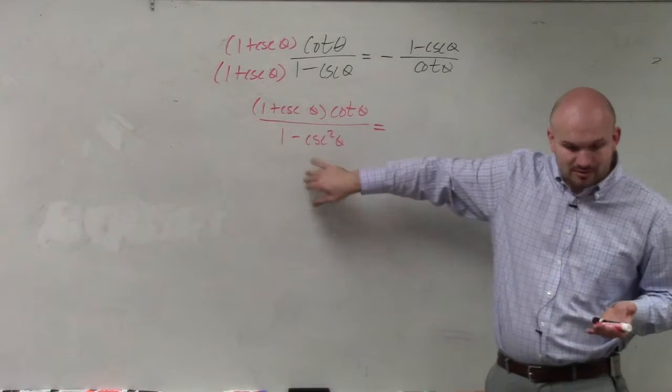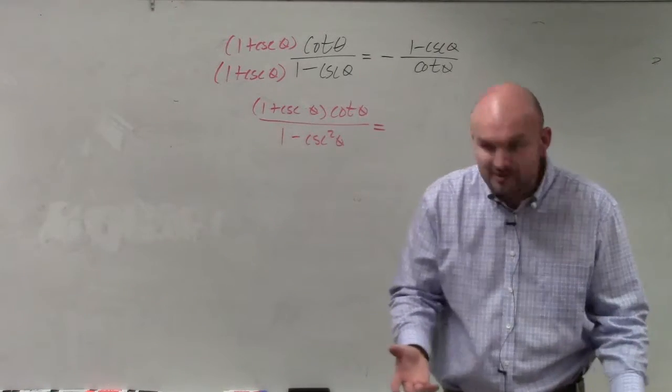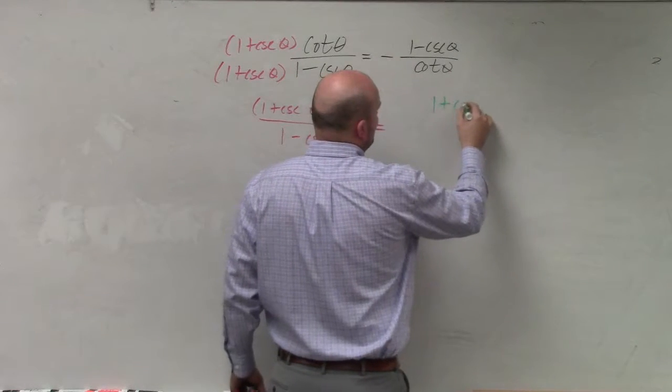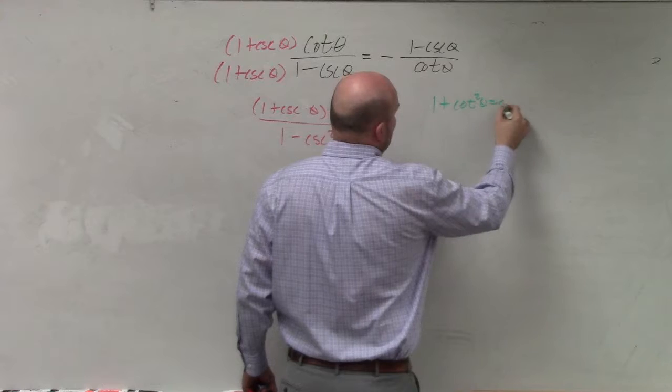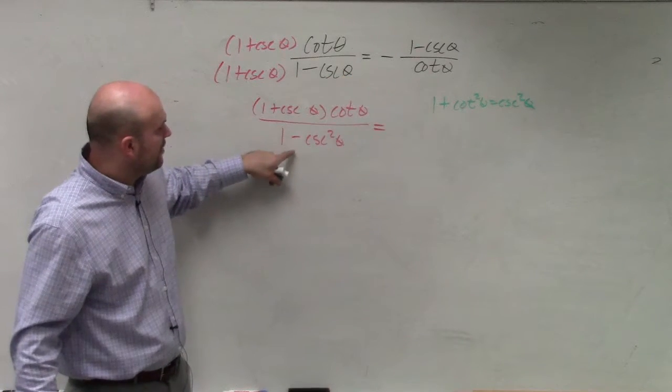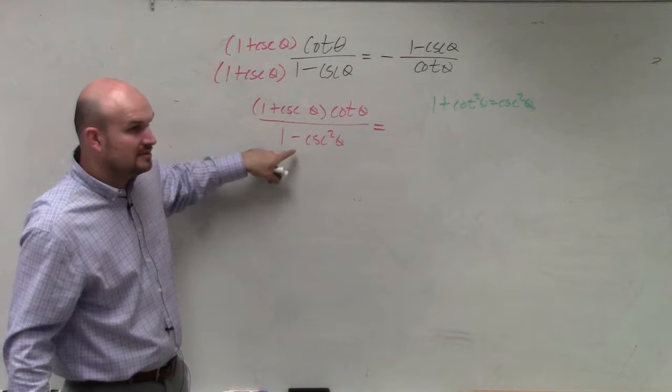Now, what does this equal? Again, you will be given your Pythagorean identity. So you don't need to have these memorized. But let's just go through it again. One plus cotangent squared of theta equals cosecant squared of theta. Can I rewrite one minus cosecant squared of theta right there from there?